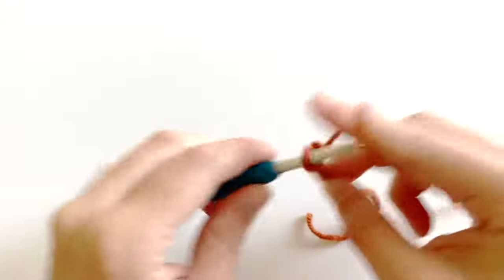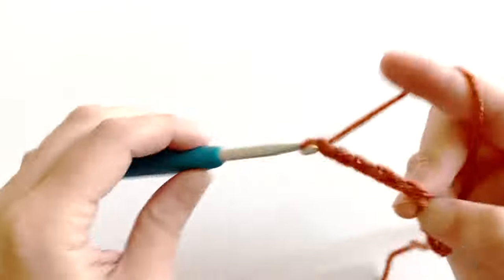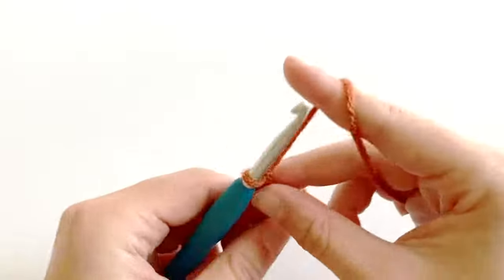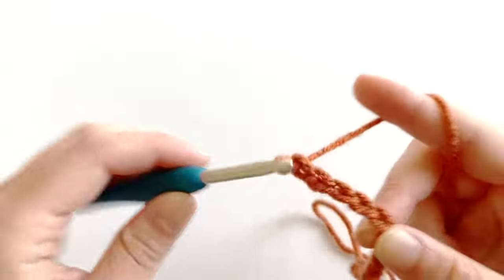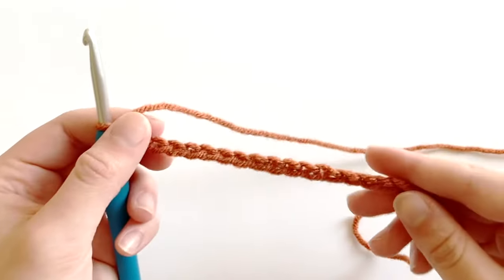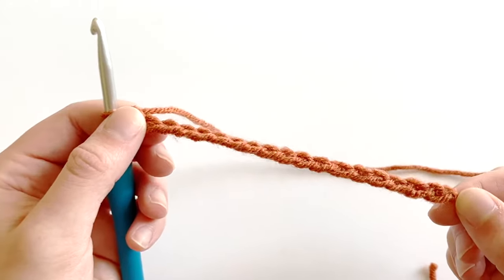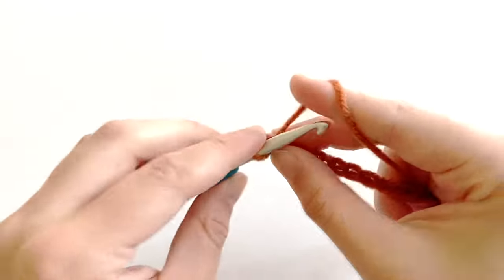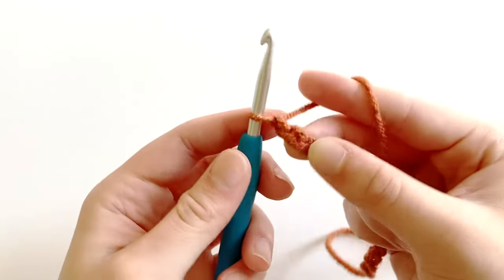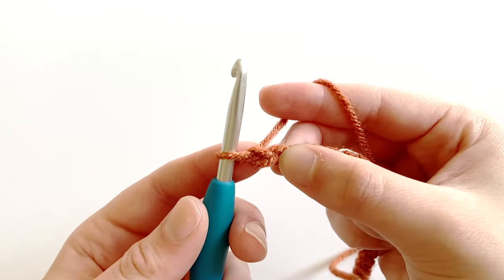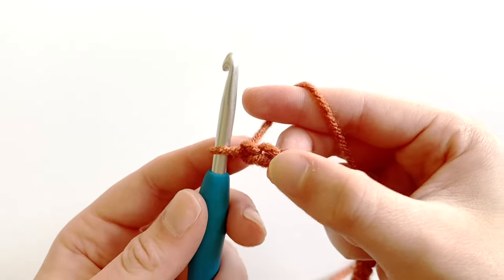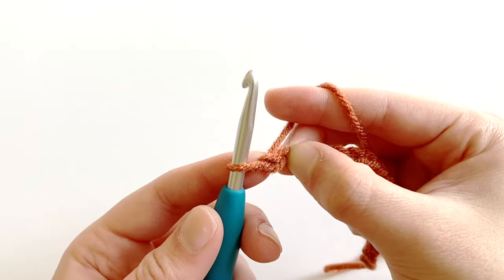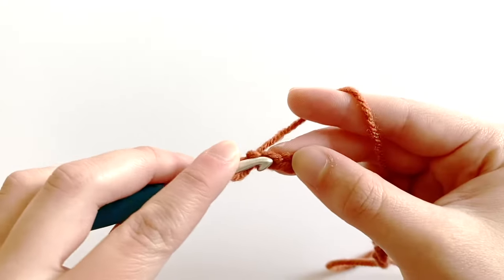Okay, so I have an even number of chains and now I need to chain one more to act as that turning chain. So to begin row one, in that second chain from your hook you're going to want to work one single crochet.